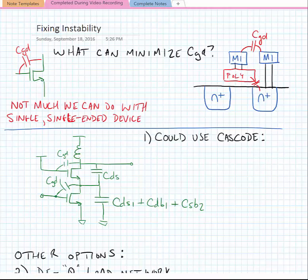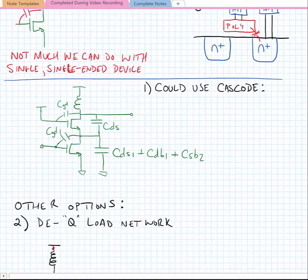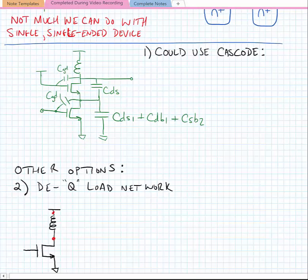Alternatively, if we can use more than one device, we might be able to cascode. And cascoding, much like it helped us to improve the output power and efficiency of our amplifier, it also can help to improve the stability. And the reason is, let's say that we have a feed-forward signal that goes through the capacitance and then heads towards the output of the device. It has a few paths it can take. That feed-forward signal can go through the capacitance, through the upper MOSFET in the cascode to the output.